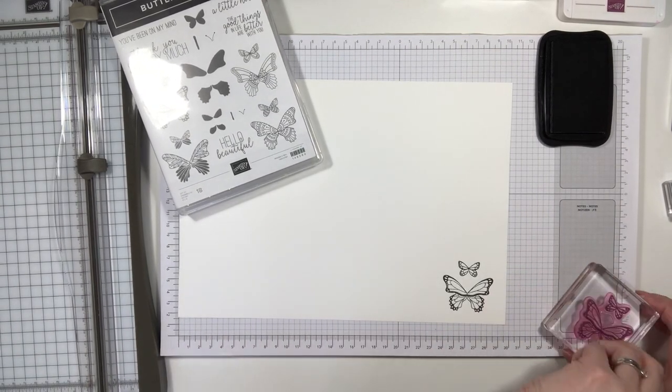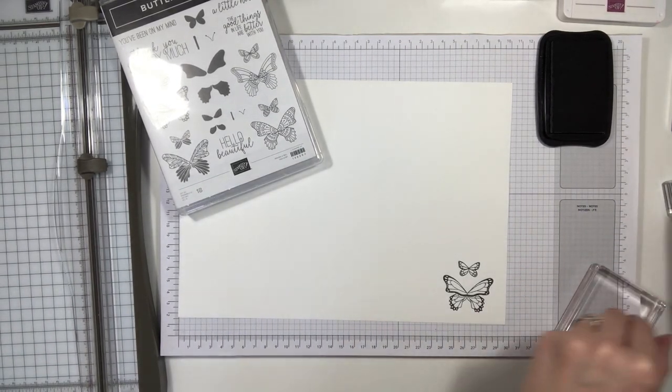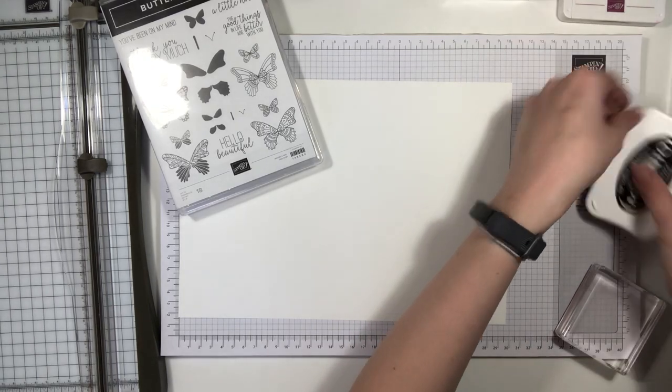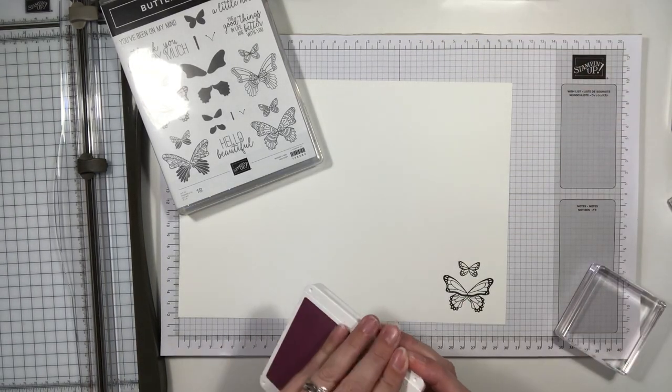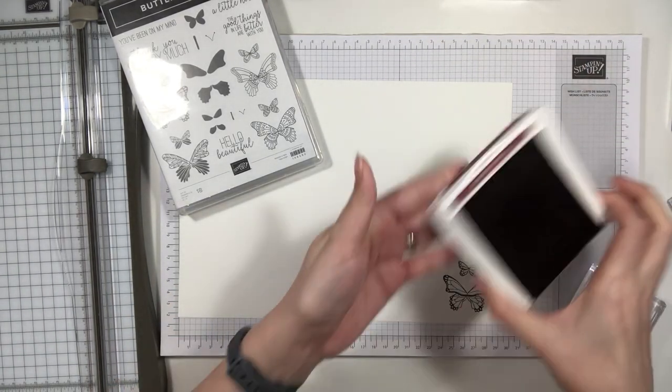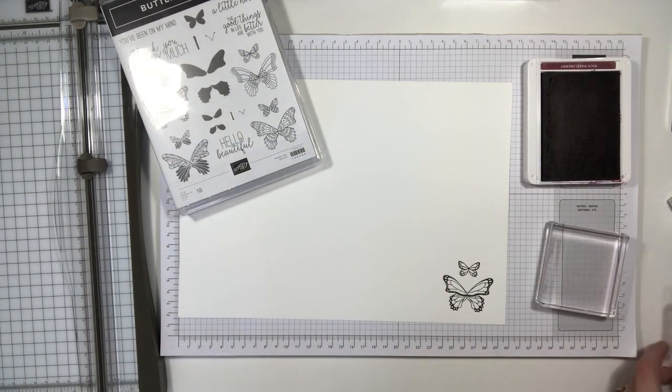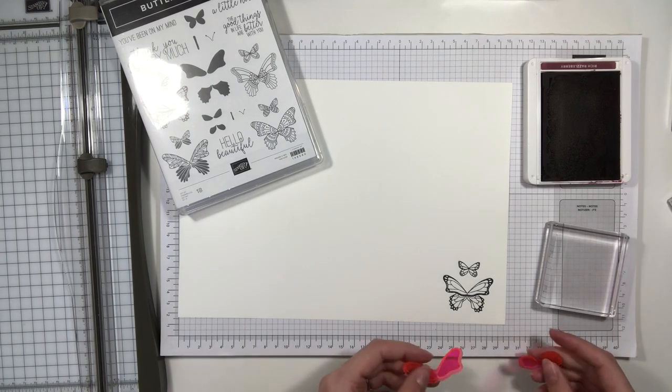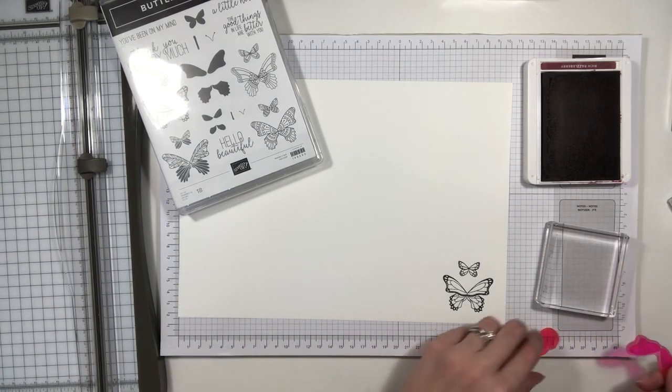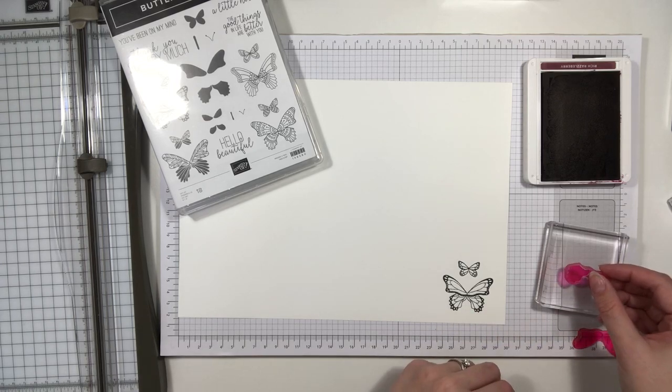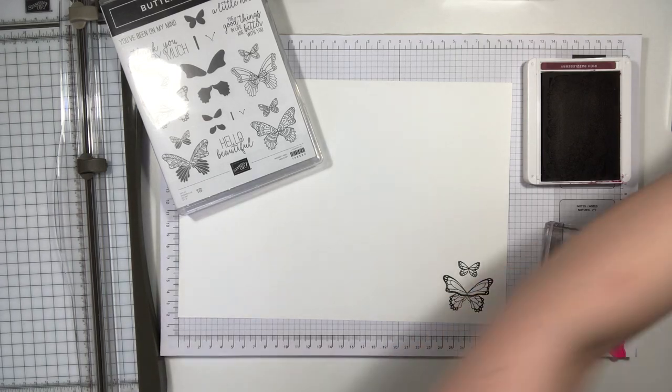Stamping in black and then I'm going to do this one in rich razzleberry. I did them in all of the different regals colours for my swaps, so that's quite good as well. We're going to do the bottom one first.